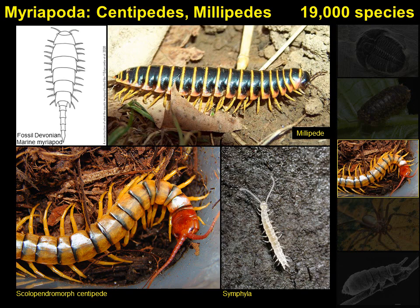Myriapods include two familiar groups — the millipedes and the centipedes — with about 19,000 species described. We've already heard about millipedes being among the first animals on land. Millipedes are generally slow-moving detritivores, distinct from other myriapods in that they have two pairs of legs arising from each segment rather than a single pair. There are about 15,000 species of millipedes described. Although millipedes and centipedes are often confused, they are really very different kinds of animals — centipedes are generally fast, venomous predators, with about 3,000 species known.